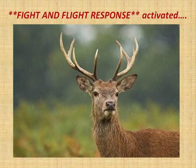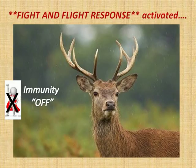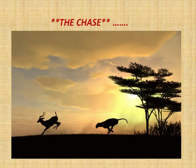When the non-essential operations stop, two of the main operations which stop are the immunity system and the growth system. With the immunity system gone, that army which was fighting the infection inside the deer stops fighting — because if the lion were to catch the deer, that infection would be the lion's problem. It's not essential at this moment. At this moment, it is essential to save life.